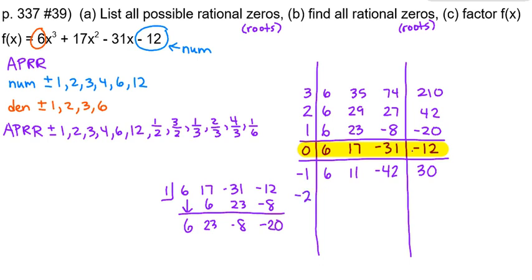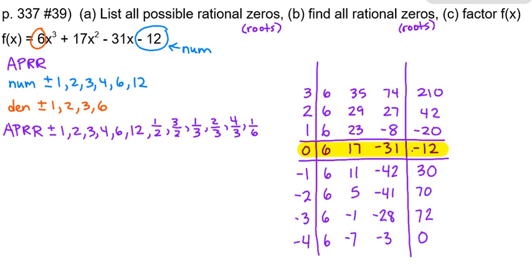I'll go ahead and do a few more rows quickly — you can also pause and make a few rows yourself, then we can compare. After working through more candidates, I found that negative 4 is a root, which is super exciting.